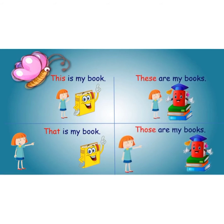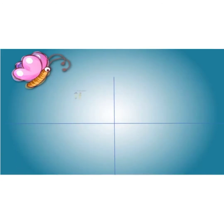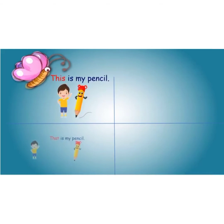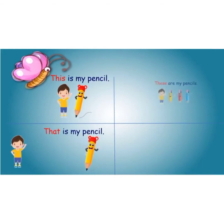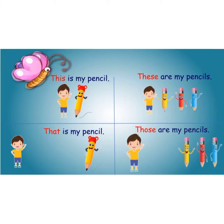Have you understood? Third example. 'This is my pencil' — singular, near. 'That is my pencil' — singular, far. 'These are my pencils' — plural, near. 'Those are my pencils' — plural, far.